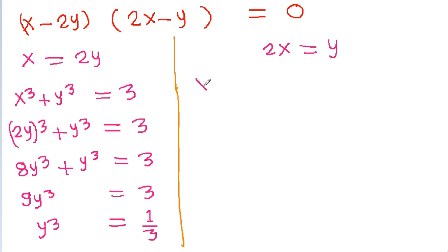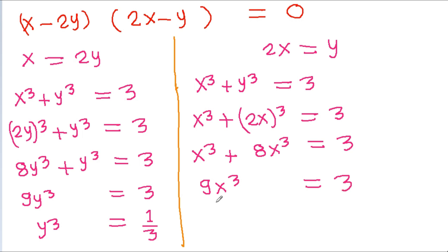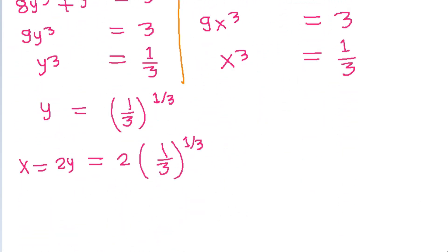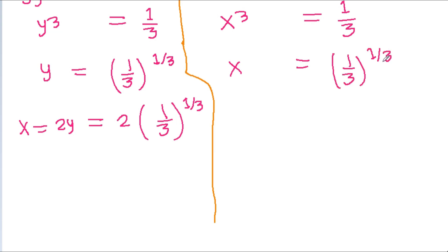For the second case, substituting y equals 2x into x cubed plus y cubed equals 3 gives x cubed plus 8x cubed equals 3, so 9x cubed equals 3, giving x cubed equals 1/3, so x equals (1/3)^(1/3). Then y equals 2x equals 2 times (1/3)^(1/3).